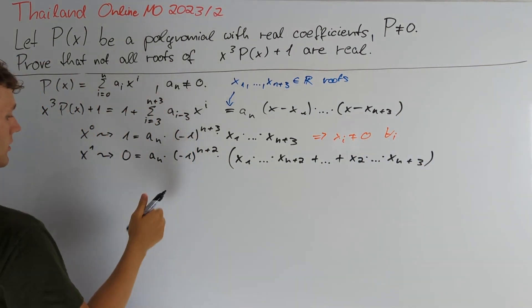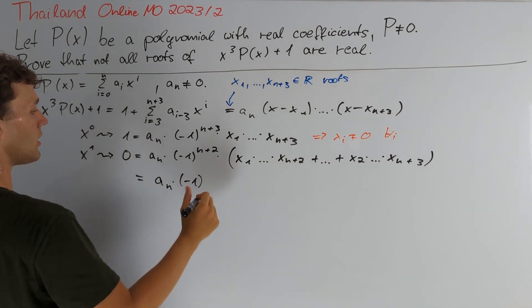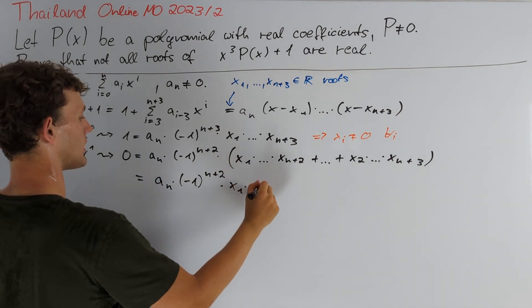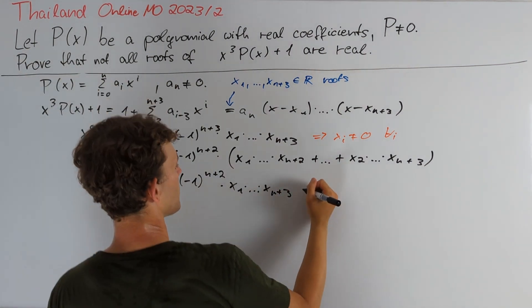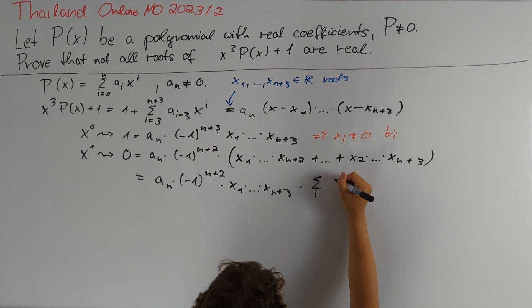And therefore, we can rewrite our equation such that we get that 0 is equal to aₙ times (-1) to the power of n+2 times x₁ and so on times xₙ₊₃. And now we multiply with the sum over all indices i of 1 divided by xᵢ.